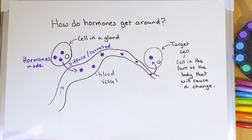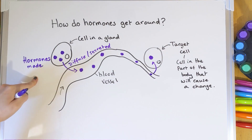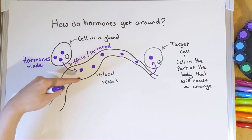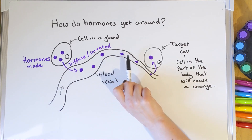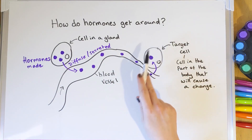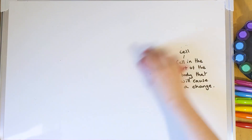So to summarise: cells in a gland make hormones — depending on which gland, it'll be a different hormone. Those hormones, when needed, are secreted and released into the blood. They travel through the blood until they reach the target organ and the target cells within it, which bring about a change — either creating another hormone or causing something to happen. Make sure you check Google Classroom for the quiz, and I'll see you very soon.